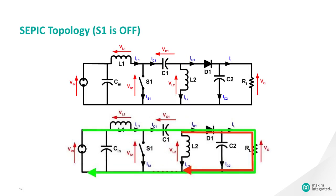When switch S1 is turned off, the current IC1 becomes the same as the current IL1, since inductors do not allow instantaneous changes in current. The current IL2 will continue in the negative direction.